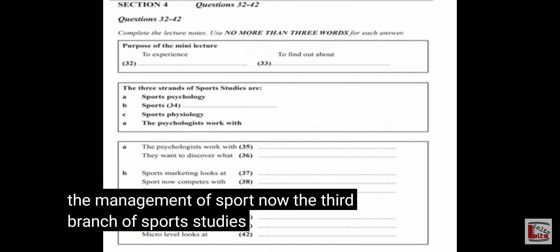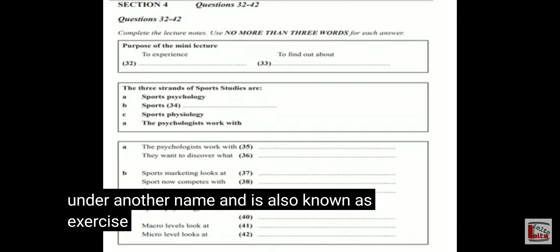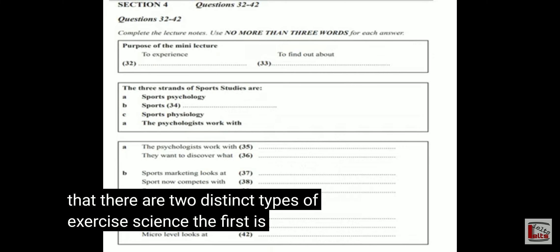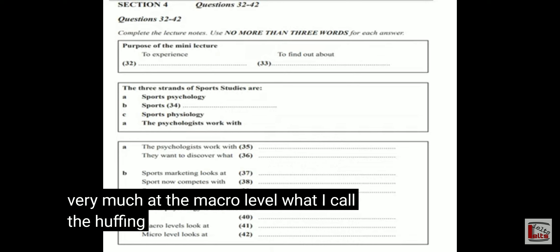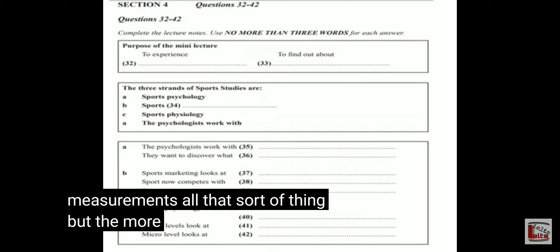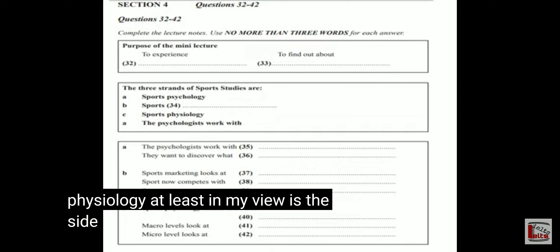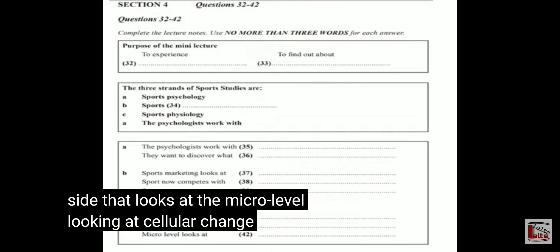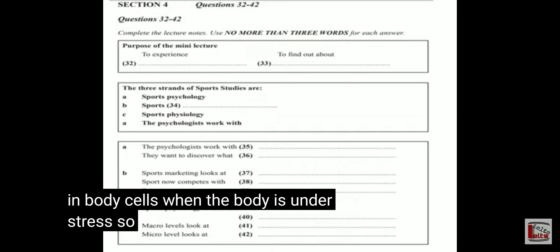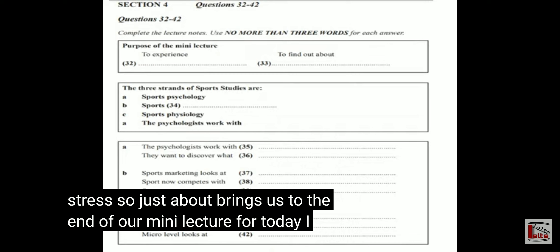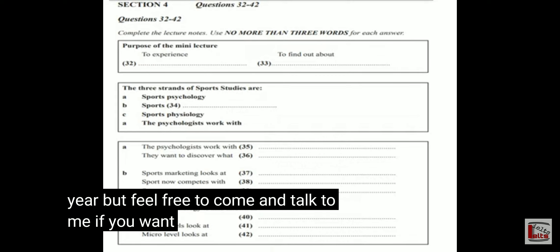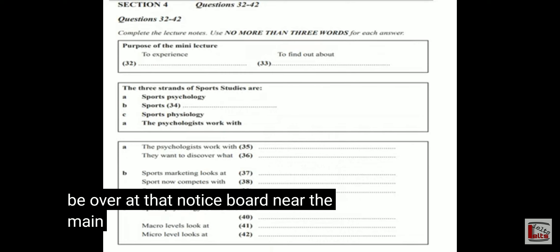The third branch of sports studies is also known as exercise science. There are two distinct types: the first works at the macro level — what I call the huffing and puffing people — looking at fitness testing, body measurements, that sort of thing. But the more interesting side, at least in my view, is the micro level, looking at cellular change and research into changes in body cells when the body is under stress. That just about brings us to the end of our mini lecture for today. I look forward to seeing you on our course next year. Feel free to come and talk to me — I'll be at the notice board near the main entrance.